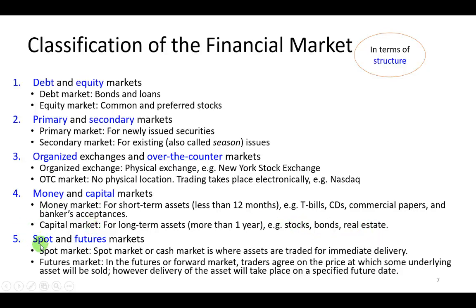We can also describe financial markets in terms of whether it's a spot market or a futures market. The spot market, also referred to as the cash market, describes the exchange of assets where payment is made right at the point of delivery — you buy it and pay for it right away. When you buy a stock or bond and pay your broker for those purchases, that's a spot market transaction. In the futures market, also referred to as the forward market, traders agree on the price at which some underlying assets — like a stock, bond, property, or commodities — would be sold; however, delivery and payment are made at some predefined future date.